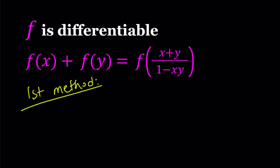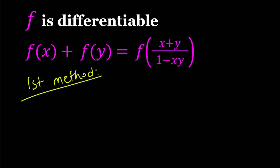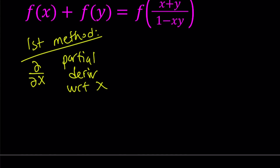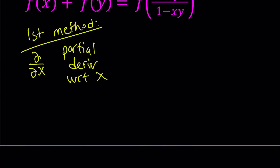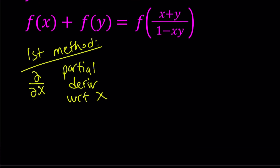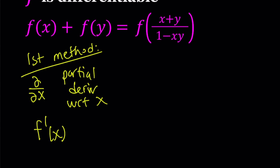I'm going to be taking the partial derivatives here, since we have two variables, x and y. I'm going to differentiate with the del operator — that's del over del x, or as some people say, the partial derivative. So I'm going to take the partial derivative with respect to x first, which means y is going to be considered a constant. So if you differentiate f of x, that's going to be f prime of x. f of y is constant, therefore it's just going to be zero. On the right hand side, I'm going to have to use the chain rule.